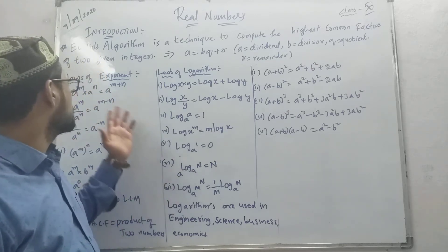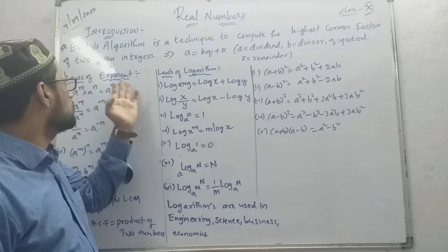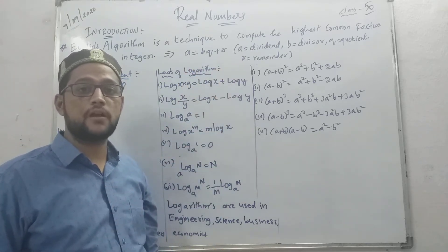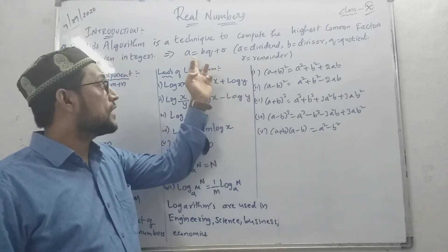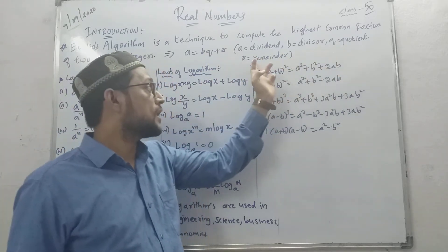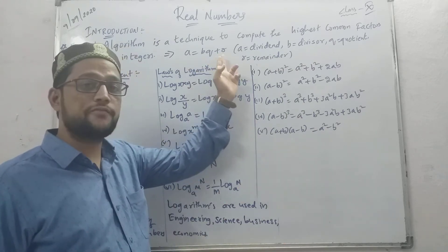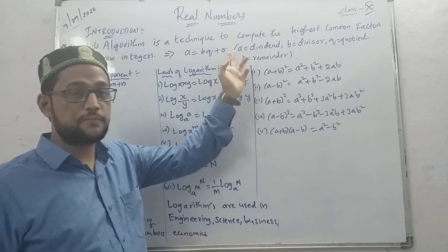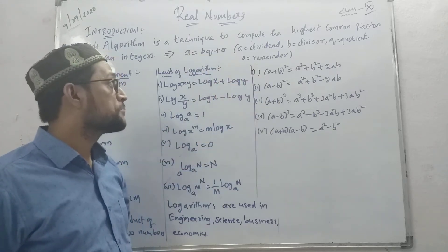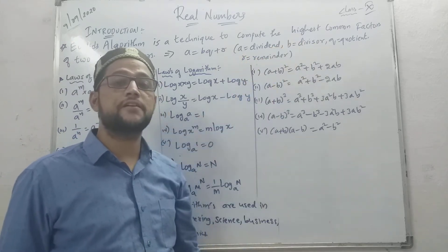Now, first what I have written here — Euclid's Algorithm is a technique to compute the highest common factor of two given integers. This is one of the important formulas. The key formula is: a is equal to bq plus r, where a is the dividend, b is the divisor, q is the quotient, and r is the remainder. I am going to explain this formula in detail. It is fundamental for finding the highest common factor — HCF.